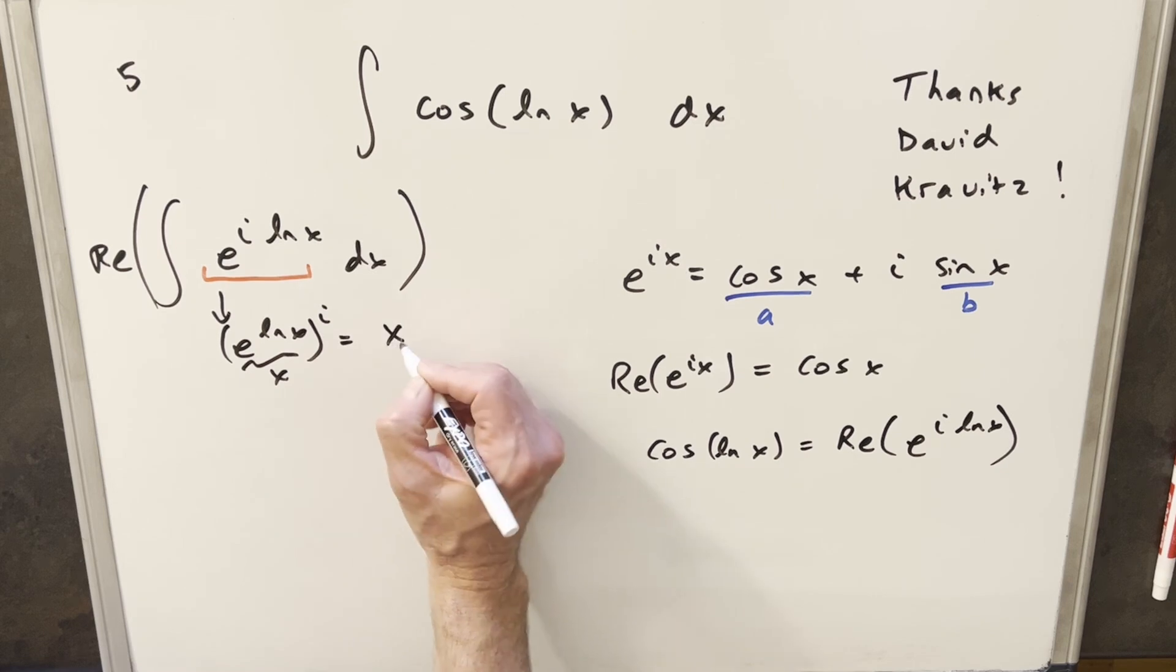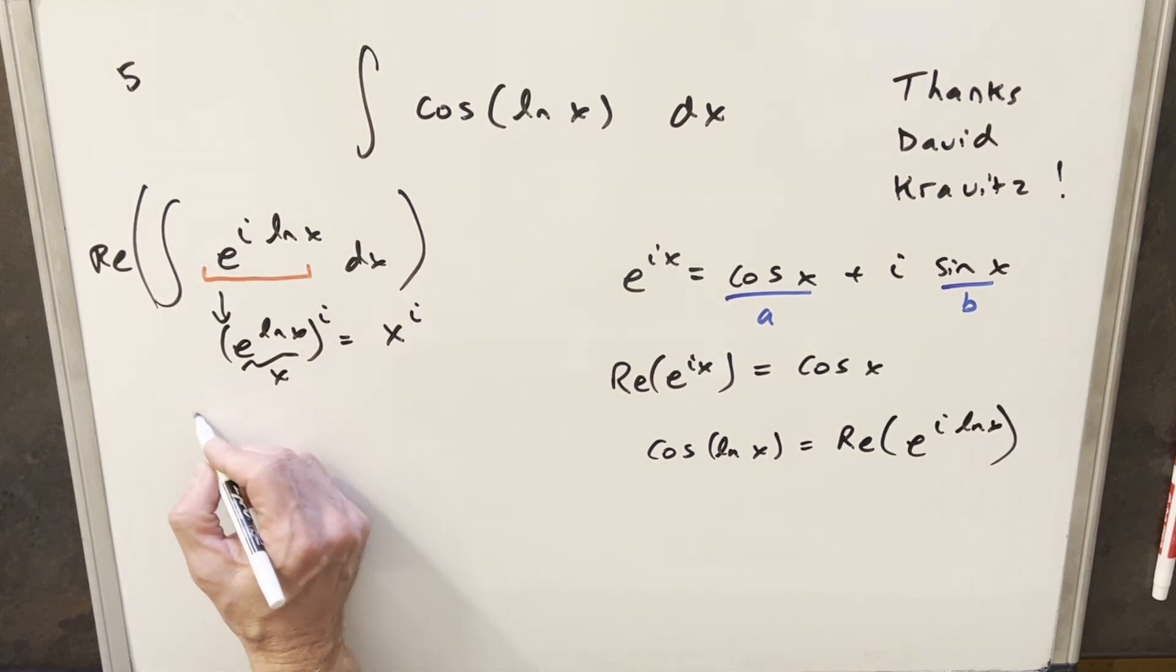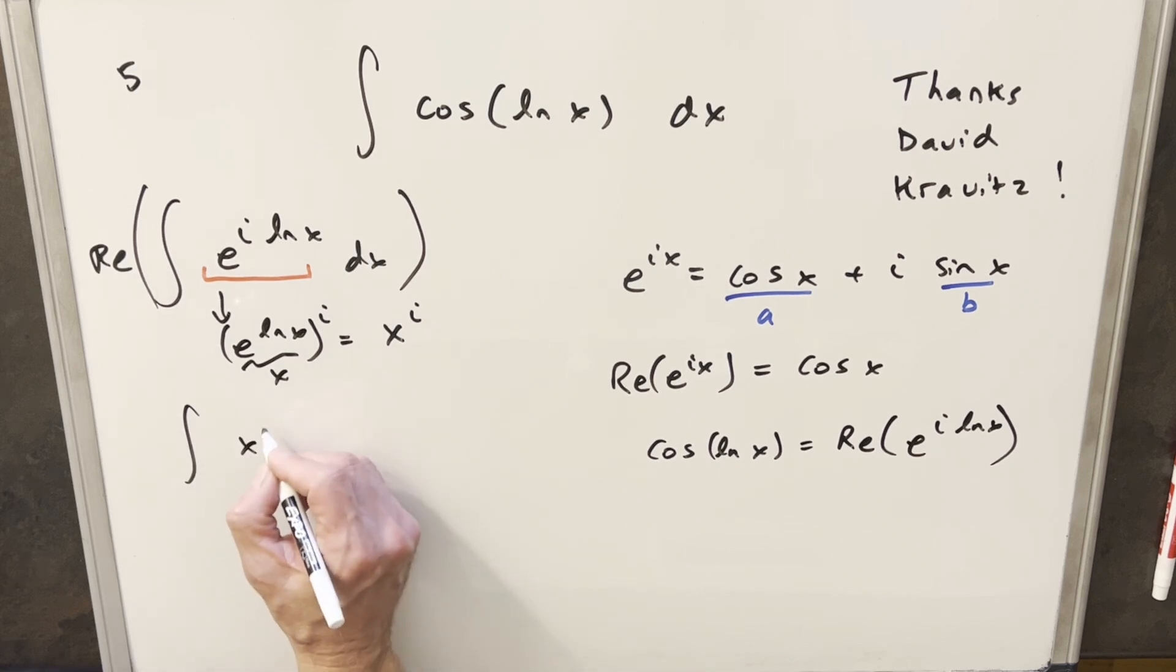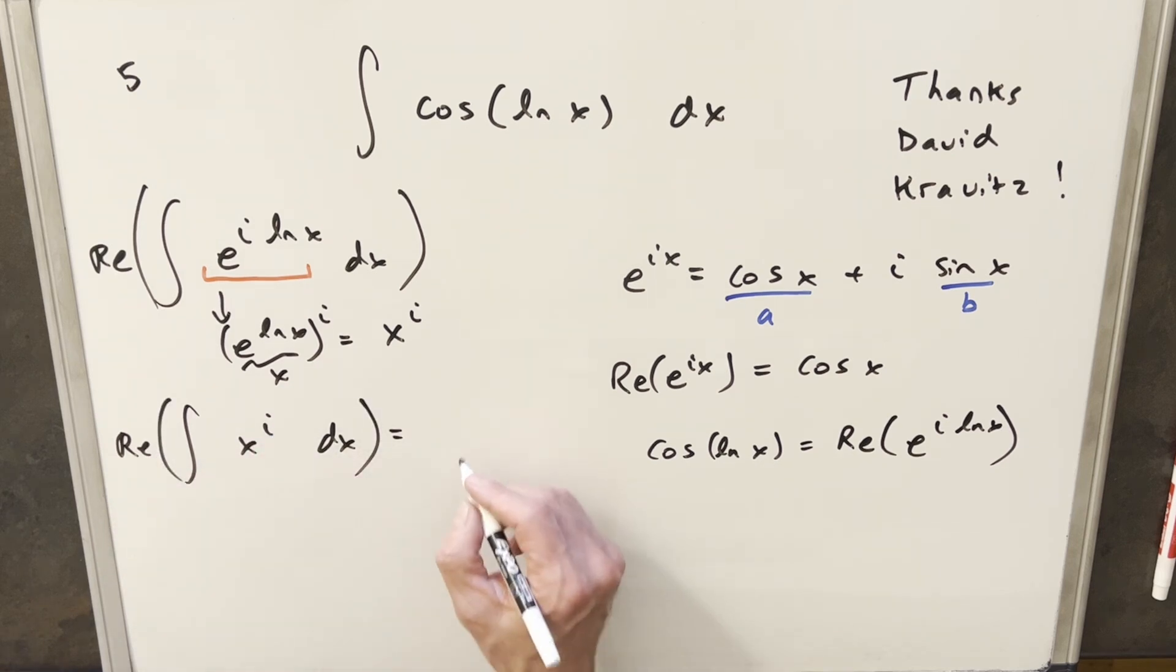But the nice thing with that is i is actually just a constant value. So integrating x to the i, we can actually just use power rule on this. Let's see how this goes. We just need to add one on the power. So we're going to have x to the 1 plus i and write it over 1 plus i.